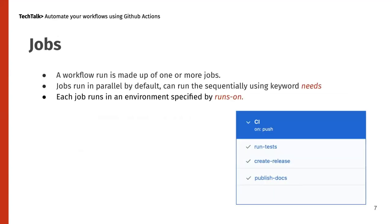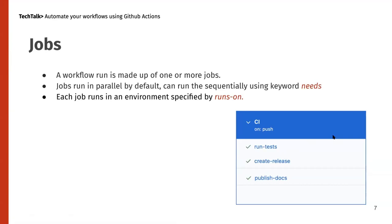A workflow run is made up of one or more jobs. For example, you might have jobs like run test, create release, and publish docs. If you drill down into these jobs, each job contains further steps — for example, to run tests you check out your code, set up the environment (like JDK for a Java project), then run the tests. These are multiple jobs that together constitute a workflow, and jobs run in parallel by default.